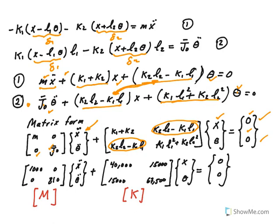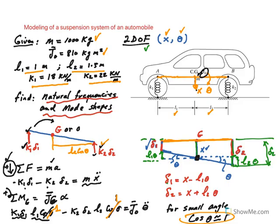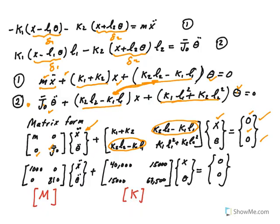Now go ahead and plug in the numbers that we had here and you end up getting this equation. Notice the symmetry, this is the mass matrix, this is the K matrix.